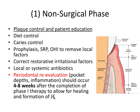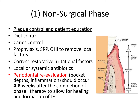JE stands for junctional epithelium. The sulcus is the area where the epithelium contacts the enamel directly, known as the junctional epithelium, with weak hemidesmosomal attachment to the enamel. A sign of healing toward a shallower pocket would be more formation of junctional epithelium, with the periodontal pocket becoming a bit more shallow.